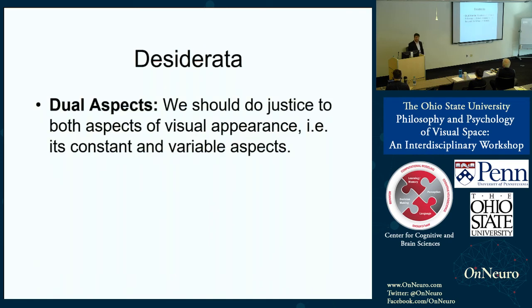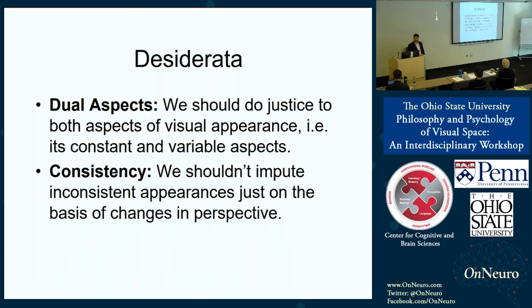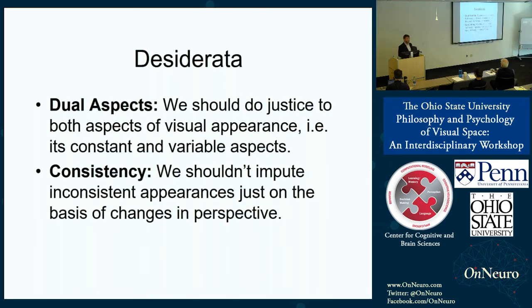We can formulate the puzzle as a conflict between two desiderata — we've been helped by a review article by Susanna Schellenberg and E.J. Green. On the one hand, there's the dual aspect desideratum, which says we should do justice to both the constant and variable aspects of visual appearance. But on the other hand, the consistency desideratum says we shouldn't impute inconsistent appearances just on the basis of changes in perspective. The problem is that these two desiderata are in tension with each other.